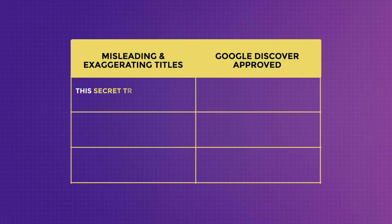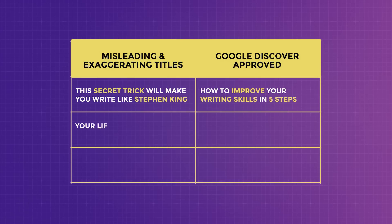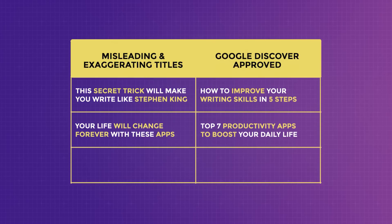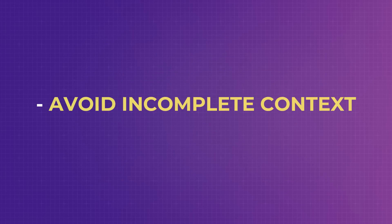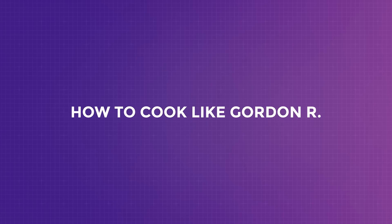If you want to show up on Google Discover, write your titles this way instead. Instead of 'This secret trick will make you write like Stephen King,' write 'How to improve your writing skills in 5 steps.' Instead of 'Your life will change forever with these apps,' write 'Top 7 productivity apps to boost your daily life.' And instead of 'This one trick will change how your articles rank,' write '5 proven techniques to improve SEO.' Also, you want to avoid incomplete content in snippets such as 'How to get rich...' or 'How to cook like Gordon R...' — do not purposely eliminate text so people will click through to see what you're talking about. Give clear and concise information in the title, and what gets people to click is if they believe they will receive the value you communicate in your title.